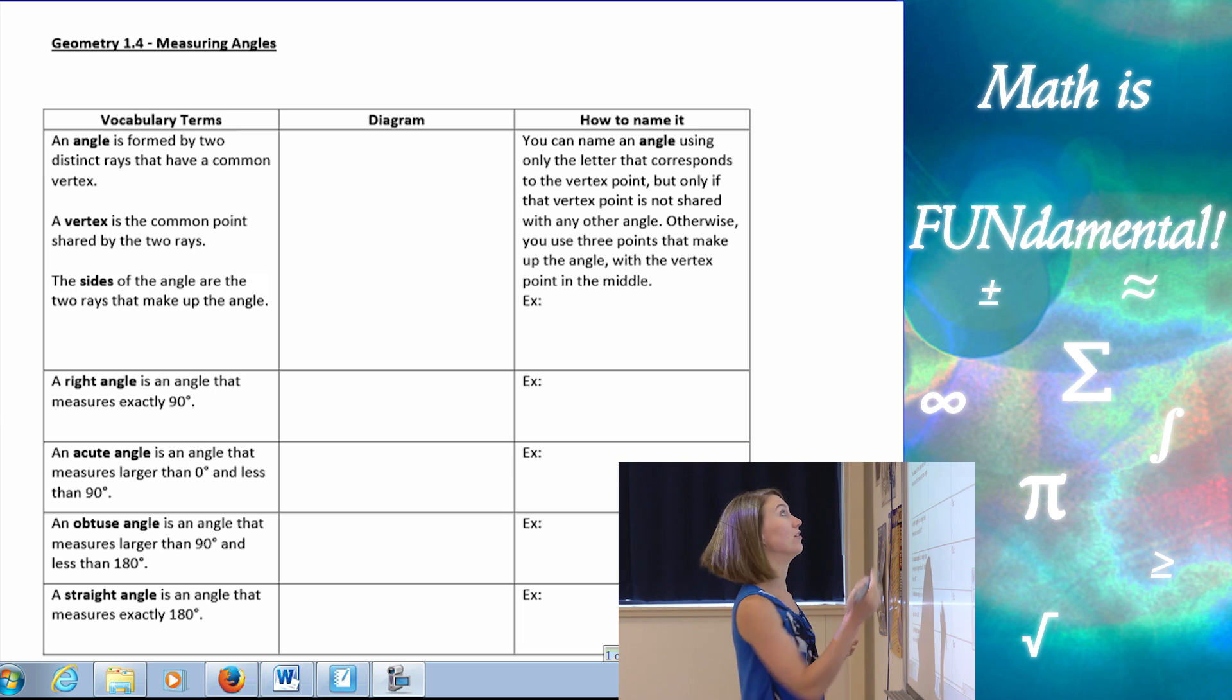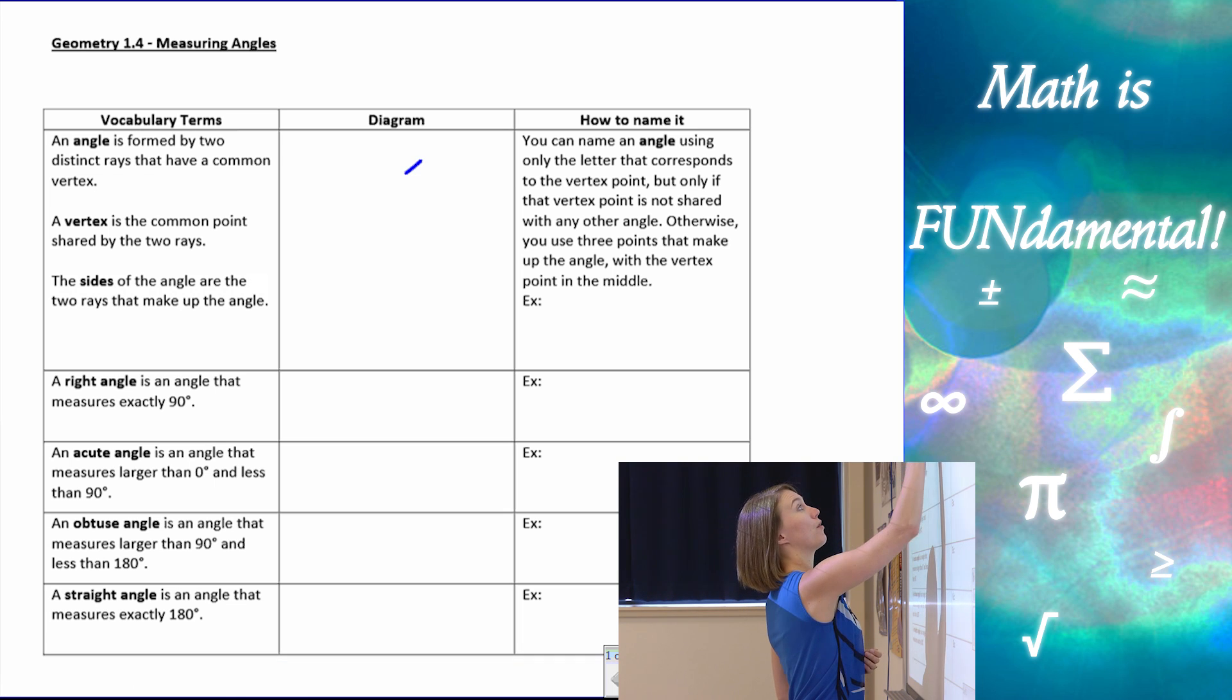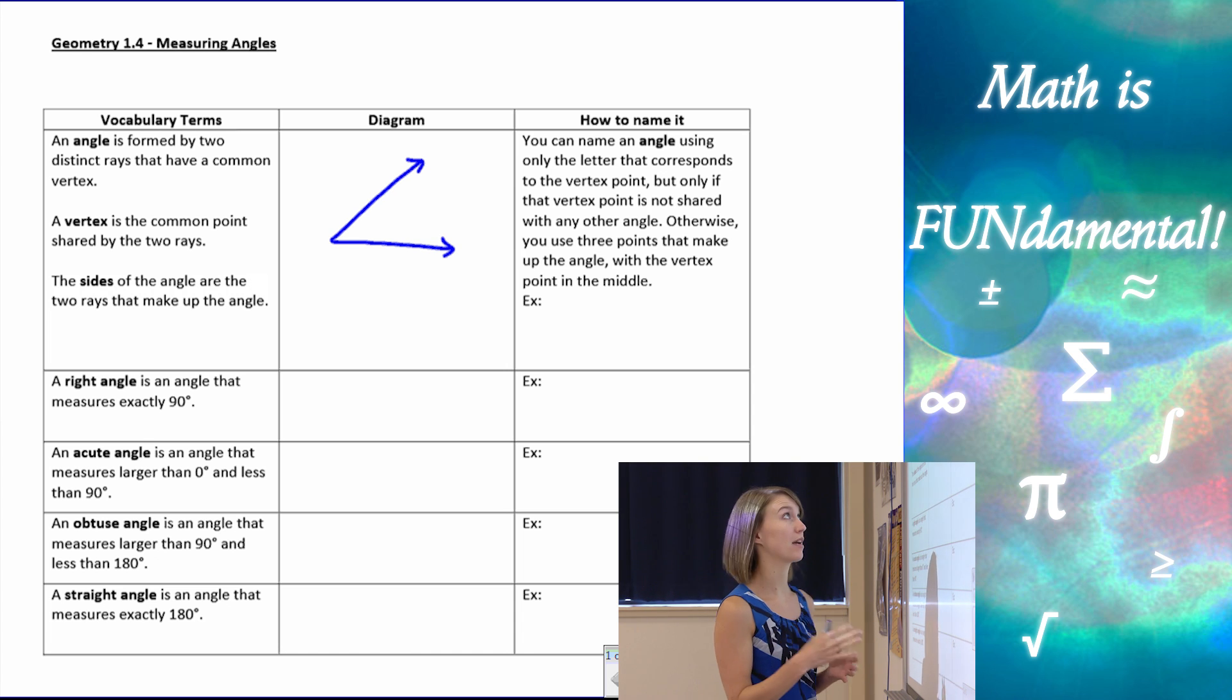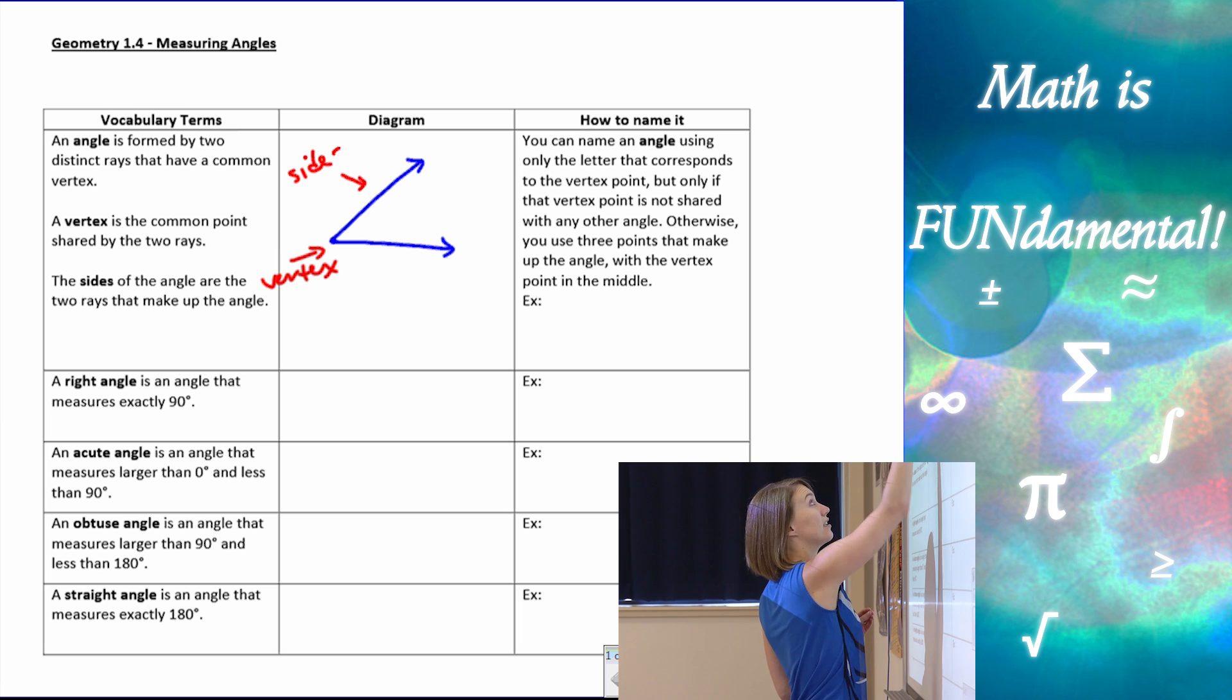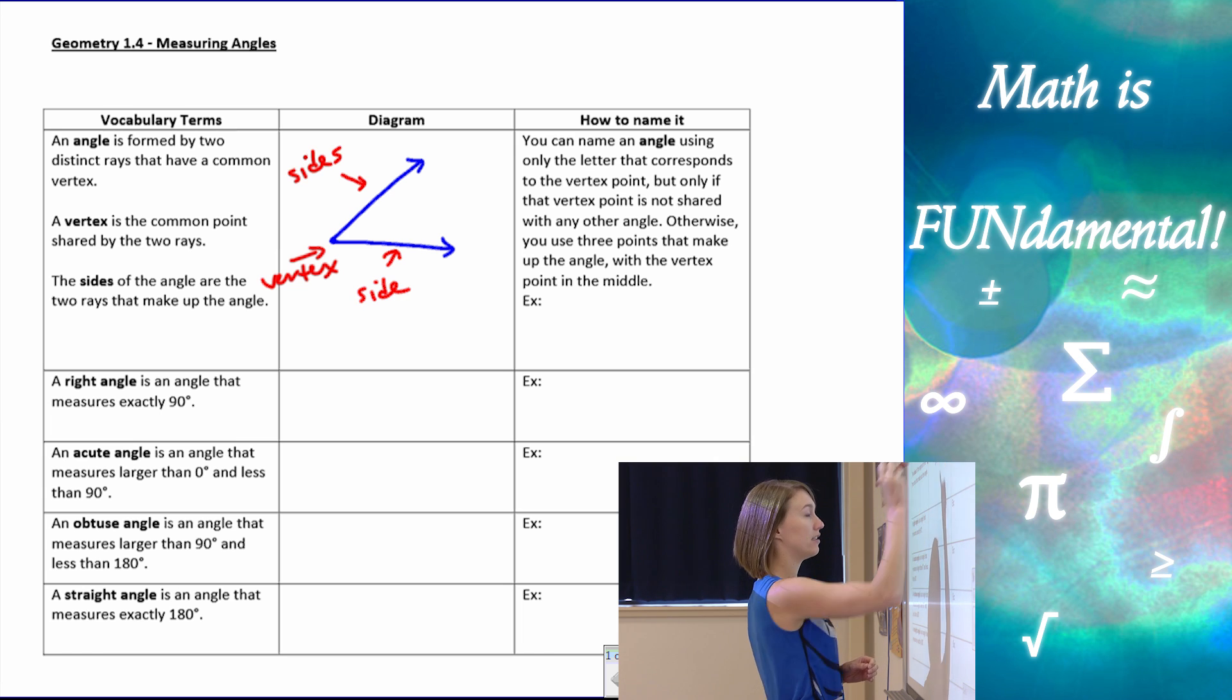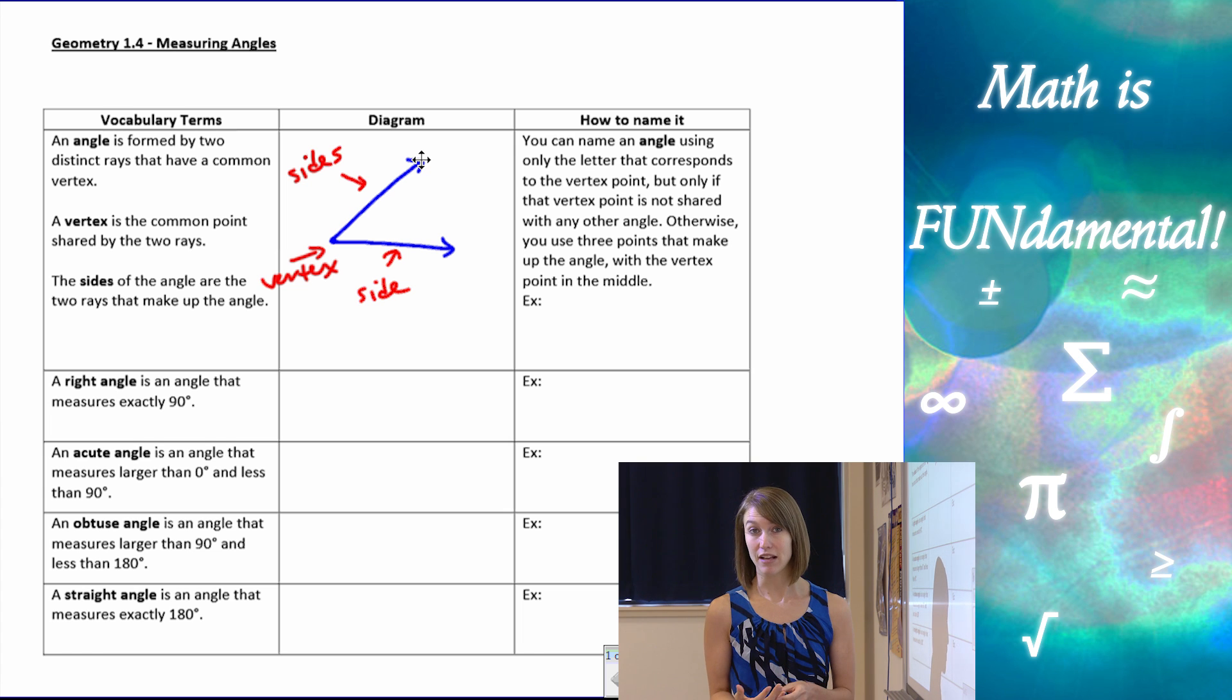First word is going to be an angle, and an angle is formed by two distinct rays. Remember we learned what a ray is in the last couple lessons. So our two distinct rays are going to have a common endpoint, and that common endpoint is what we call the vertex of our angle. Now the two rays themselves are going to be the sides. That's a side and this one's a side. And that's what makes up the basic angle.